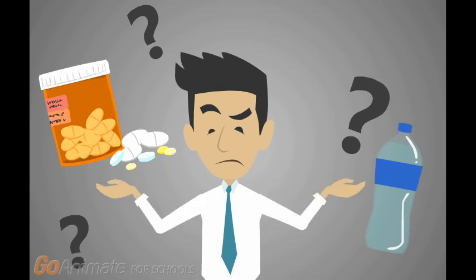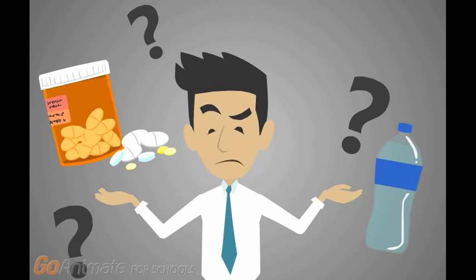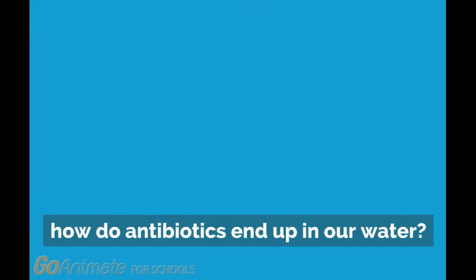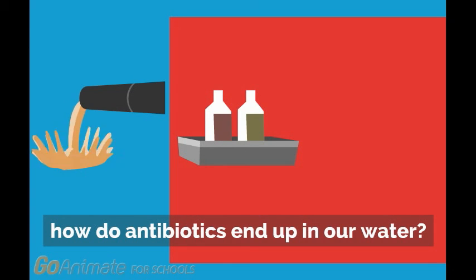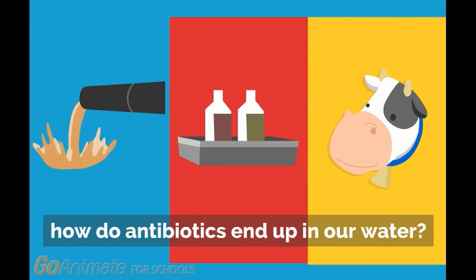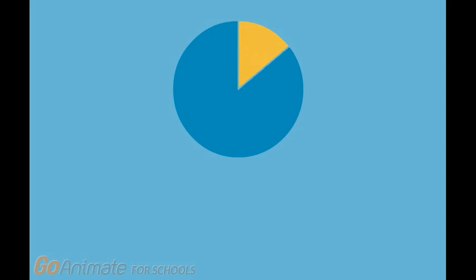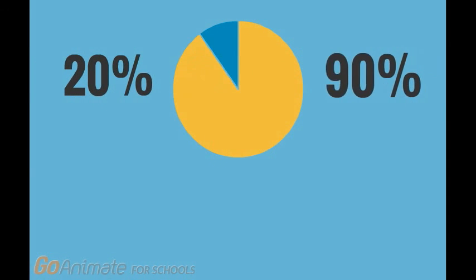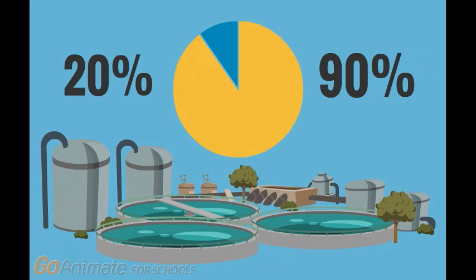How do antibiotics end up in our drinking water? Antibiotics can appear in the aquatic environment due to inadequately treated wastewater, improper disposal of unused prescriptions, or agricultural runoff. The removal rate of antibiotics can vary from 20 percent to greater than 90 percent if advanced wastewater treatment is used.